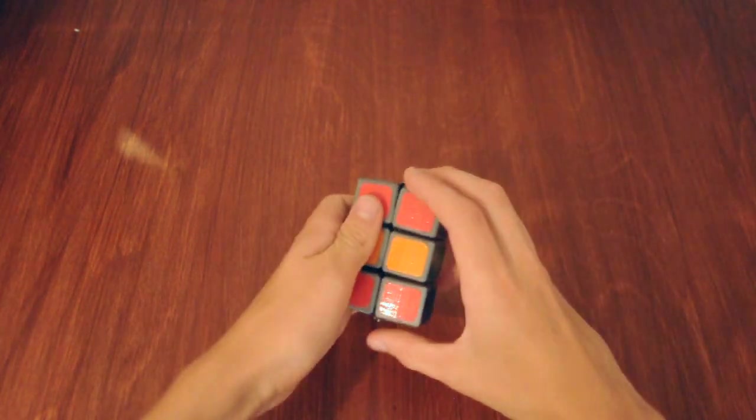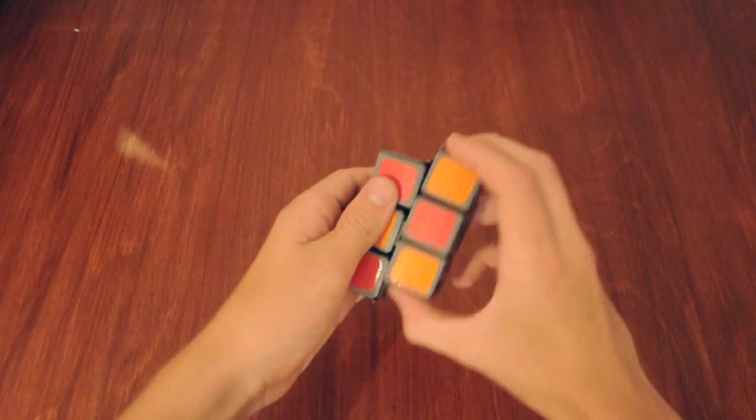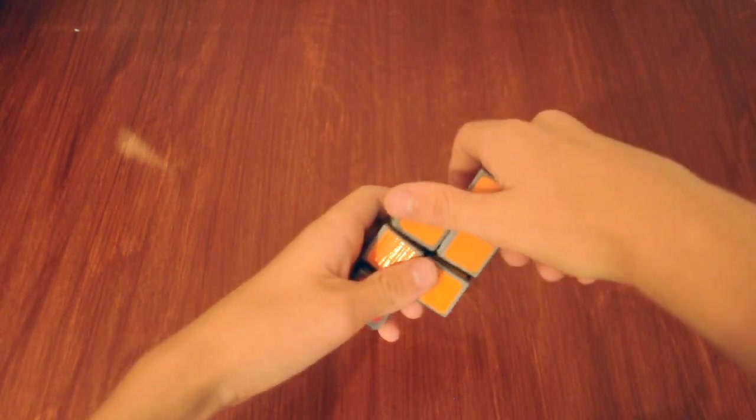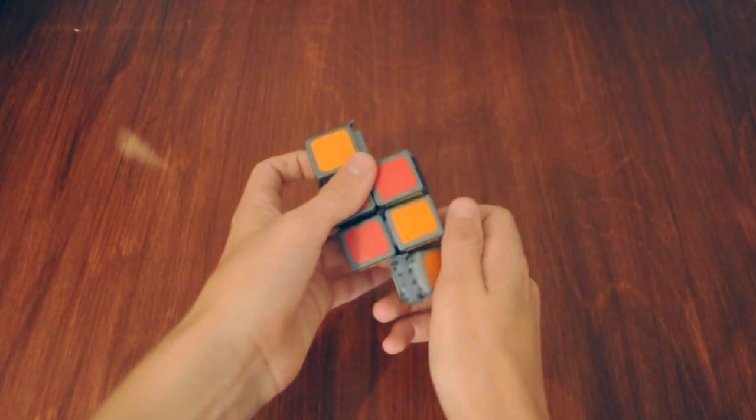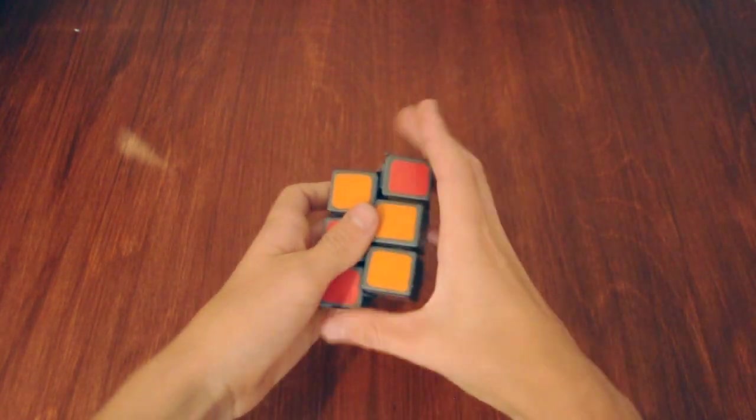The puzzle works like a normal 1x2x3. You can turn it like that, like that. But it also can do these sliding moves. It can go like that, and switch those two pieces, those two pieces, slide it back up.